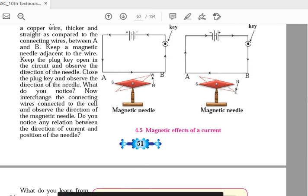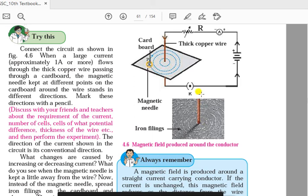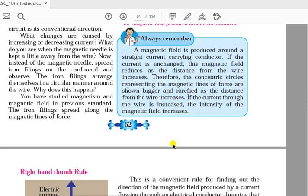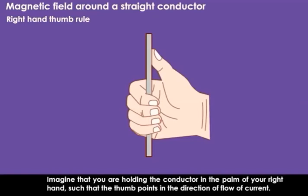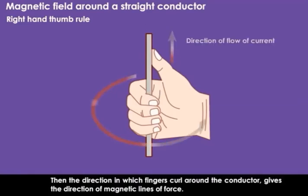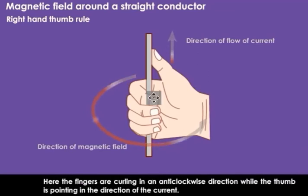The question arises: whenever current flows through a conductor, in which direction is the magnetic field created? That direction is explained by the Right Hand Thumb Rule. The concept is magnetic field around a straight conductor. Imagine holding the conductor in the palm of your right hand such that the thumb points in the direction of the flow of current. Then the direction in which the fingers curl around the conductor gives the direction of magnetic lines of forces.